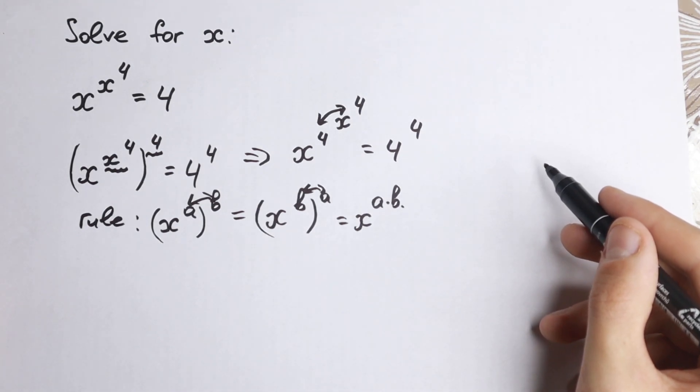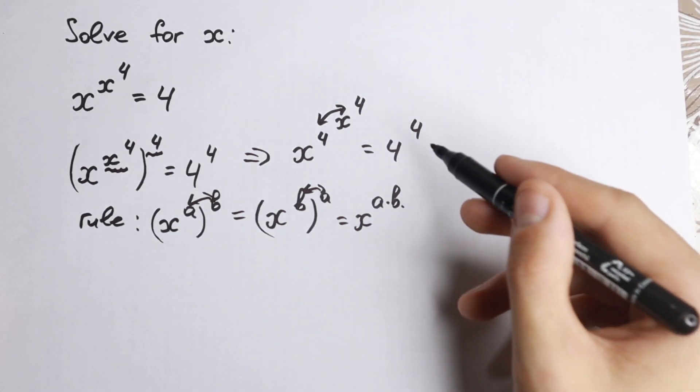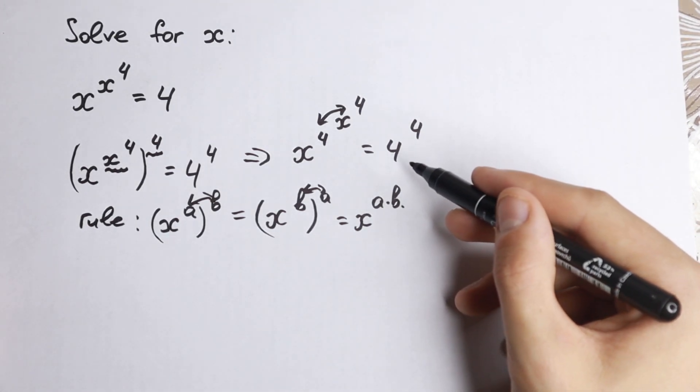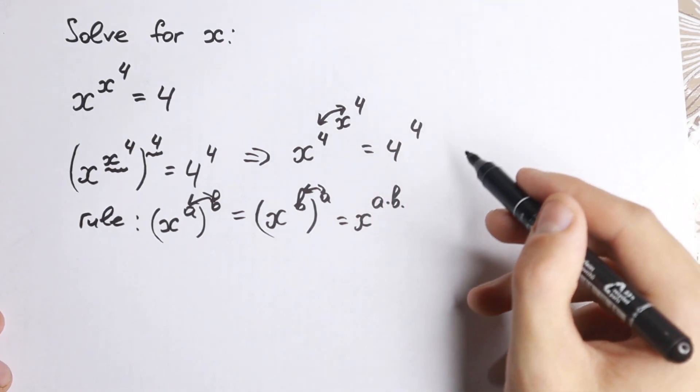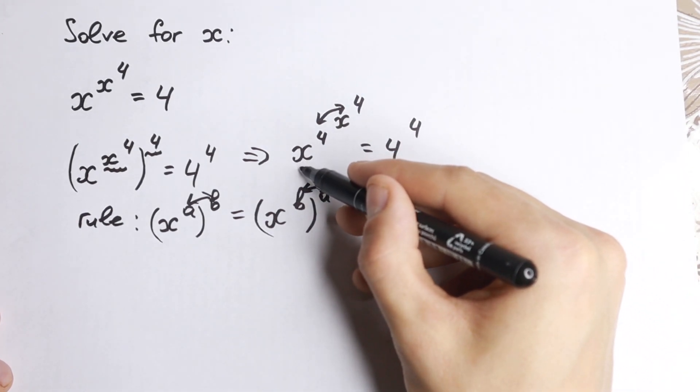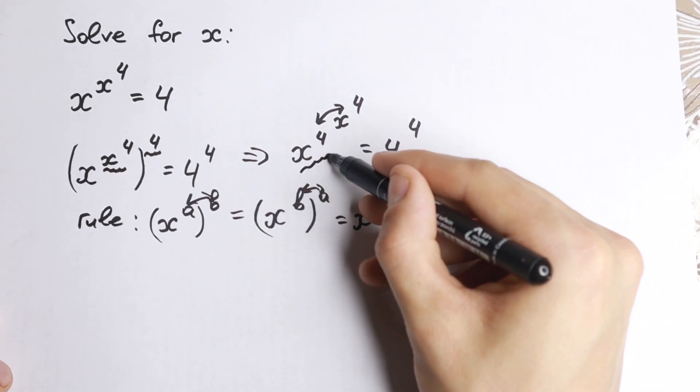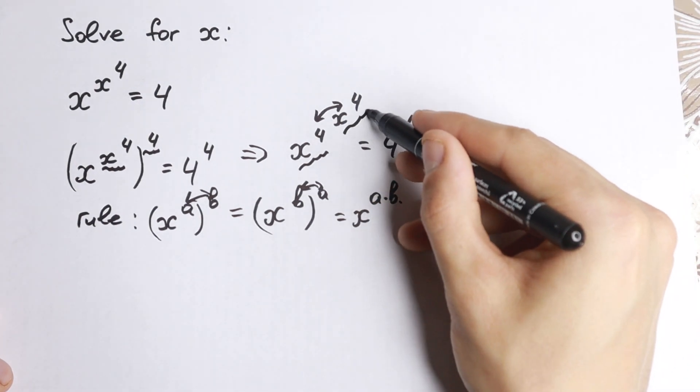And why is this good for us? Because a lot of students ask me why I do this. If you look closely on the left-hand side, we have x to the fourth to the power x to the fourth. We have the same elements as a base. So x to the fourth is the same as this x to the fourth.